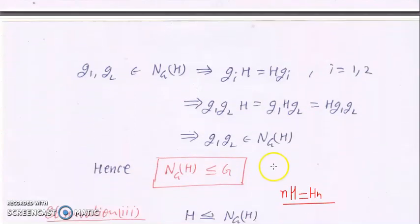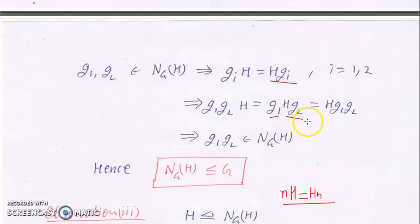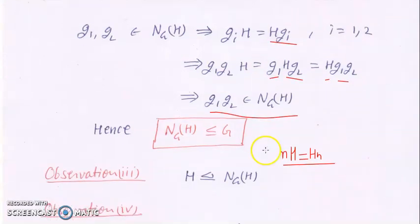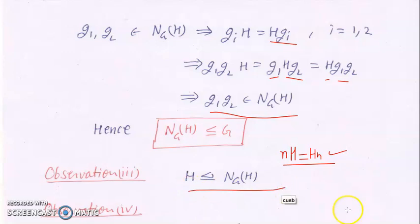Now take two elements g₁, g₂ in the normalizer of H. Then gᵢH = Hgᵢ for each i, by definition of the normalizer. Then g₁g₂H = g₁Hg₂ = Hg₁g₂, so g₁g₂ also belongs to the normalizer of H. By the subgroup test, the normalizer of H is a subgroup of G. Furthermore, since for each element of the normalizer gH = Hg holds, H is normal in the normalizer of H.